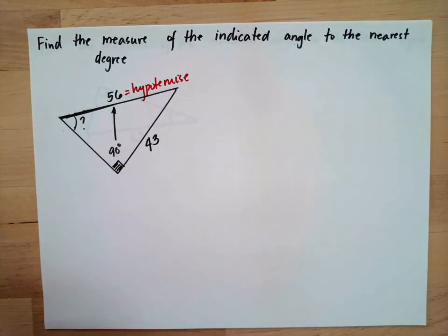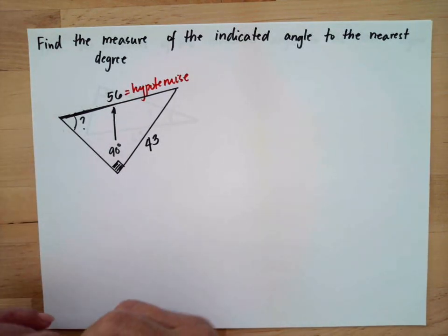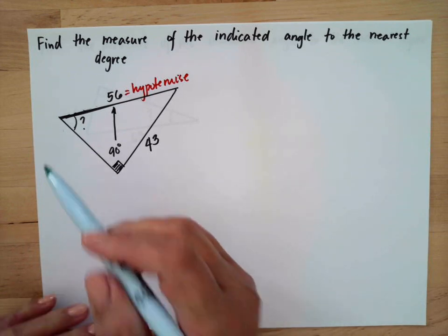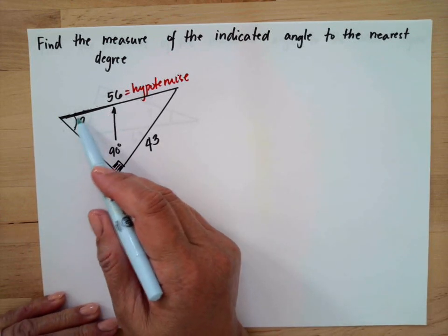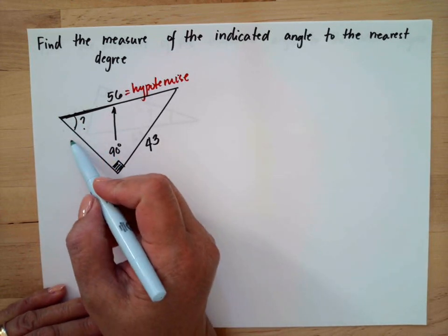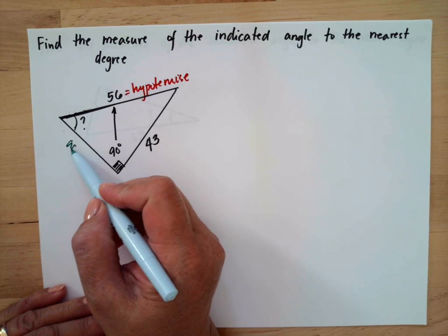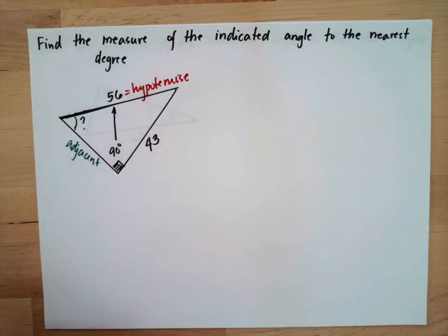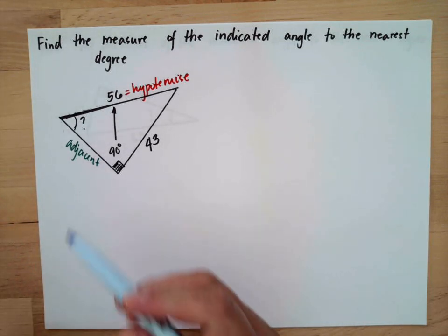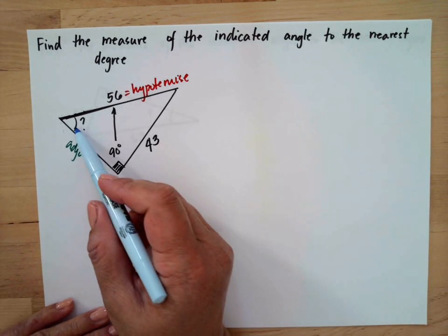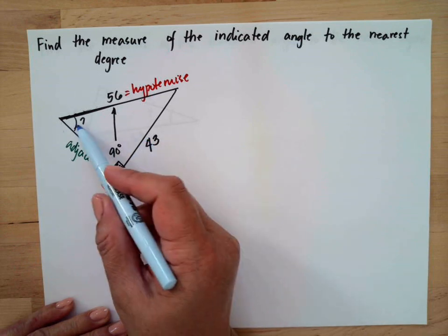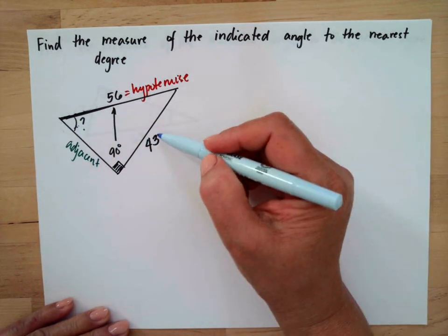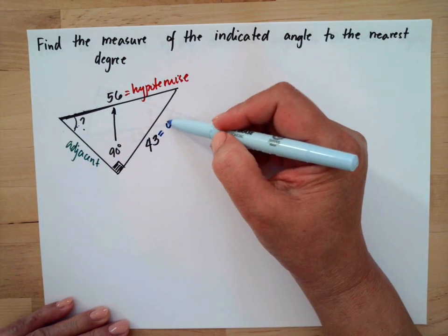The adjacent is the side beside the reference angle, and this is our reference angle, so this will be our adjacent. The opposite is the side away from the reference angle, so this side is our opposite.